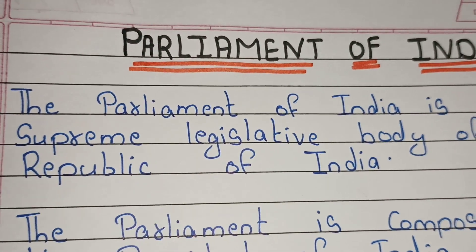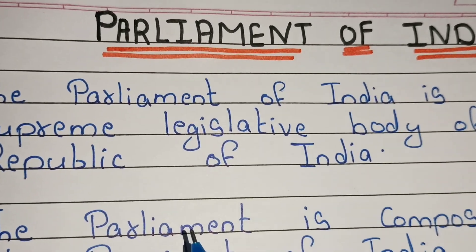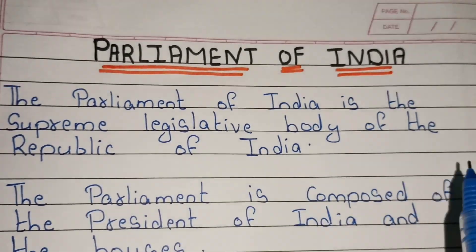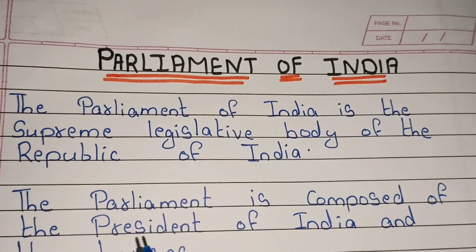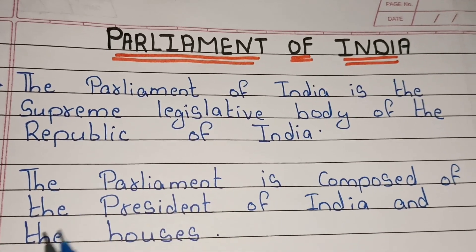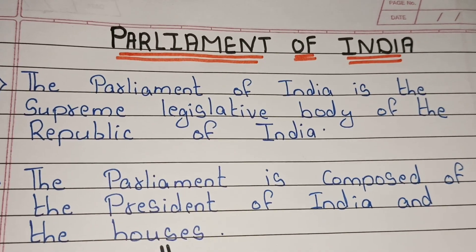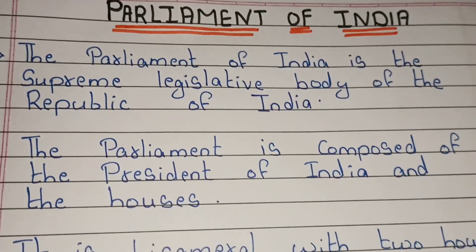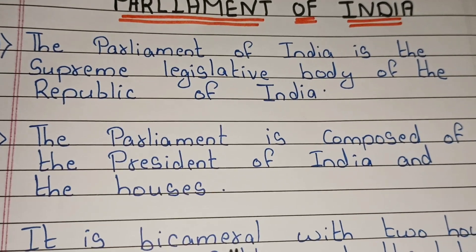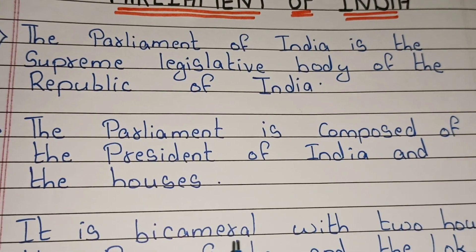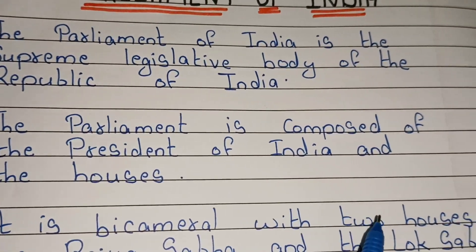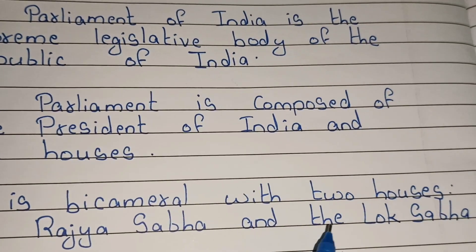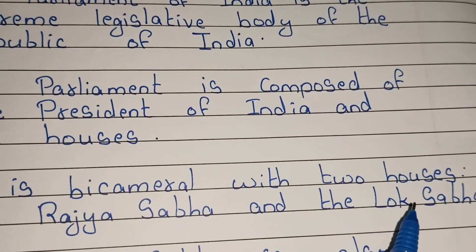The Parliament is composed of the President of India and the Houses. It is bicameral with two houses — the Rajya Sabha and the Lok Sabha.